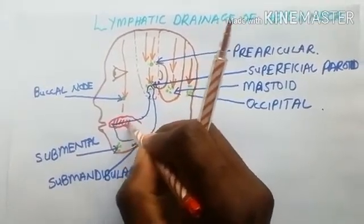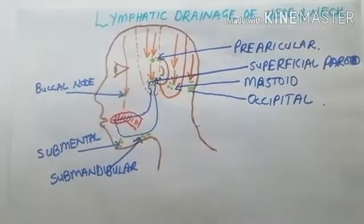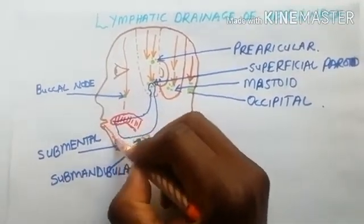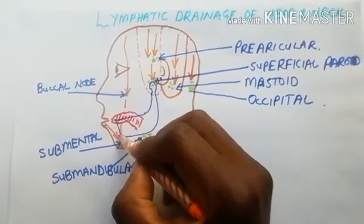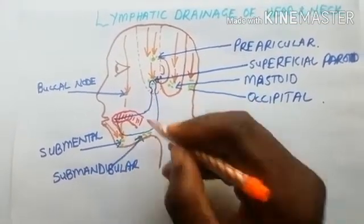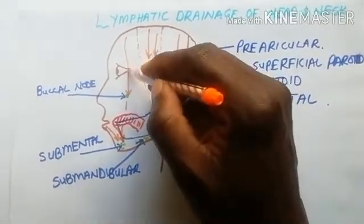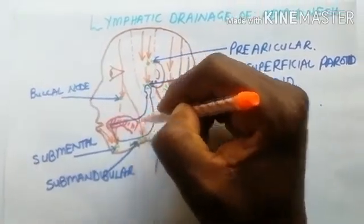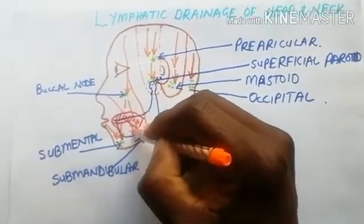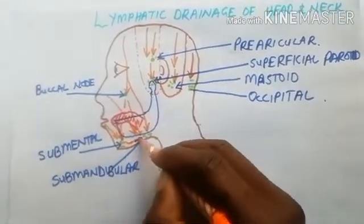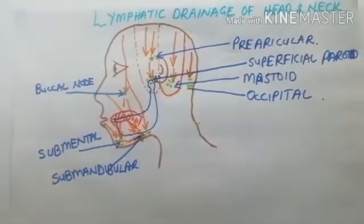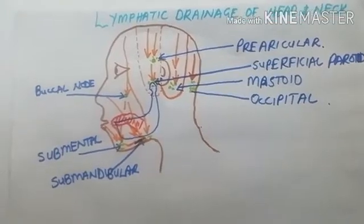The tip of the tongue and the lower lip — all those areas drain to the submental group of lymph nodes. From there, the buccal node and the submental nodes all drain into the submandibular group of lymph nodes.